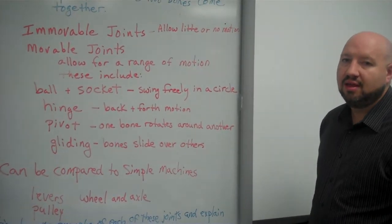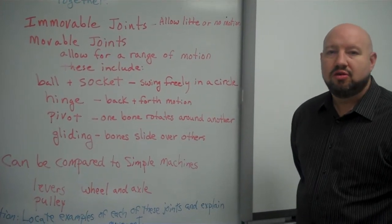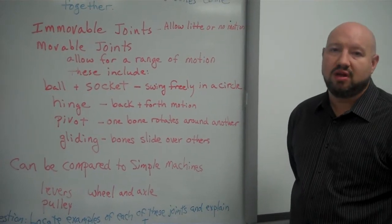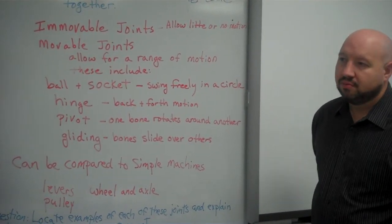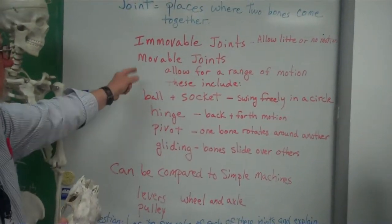That's why you kind of get that egg-shaped baby. Because the skull will be shaped that way and then over time the bones will fuse together, forming those immovable joints. Now we're going to spend the next couple of minutes talking about movable joints.